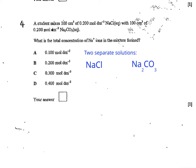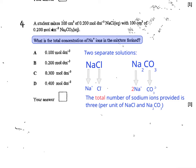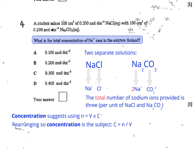So you have two separate solutions as described in the question — let's think about each one in turn. You've got sodium chloride and sodium carbonate. Looking at the two solutions, the total number of sodium ions provided is three if you take it per unit of NaCl or Na₂CO₃. What they want is the total concentration of sodium ions in the mixture formed. Concentrations suggest using the formula n = V × C, rearranged for concentration. The total volume is 200 cm³ because we've got two separate 100 cm³ samples of the different solutions.